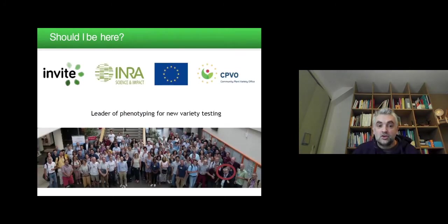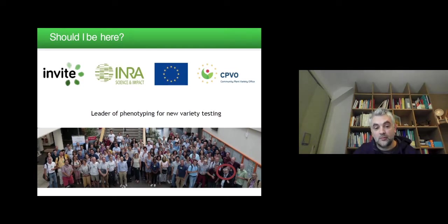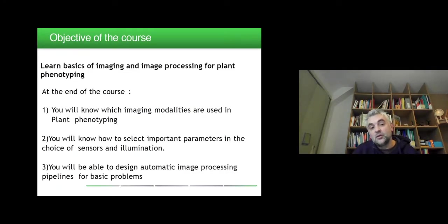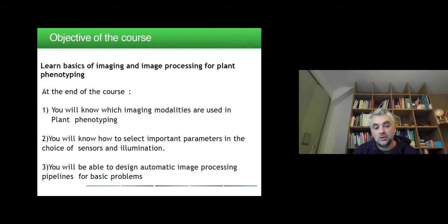A European project has been launched two years ago and I'm leading one of the work packages — the one specially dedicated to plant phenotyping — and I will be happy to share some of my expertise with you via this course. The objective of the course is to learn the basics of imaging and image processing for plant phenotyping. At the end of the course, you will know which imaging modalities are used in plant phenotyping, and you will know how to select important parameters in the choice of sensors and illumination, and be able to design automatic image processing pipelines for basic problems that you will apply in various types of hands-on work.